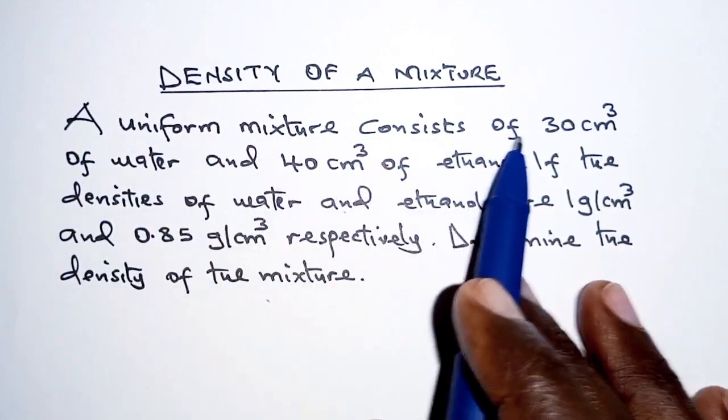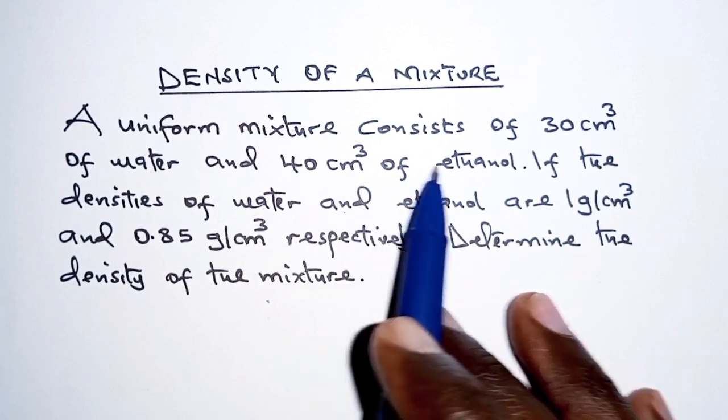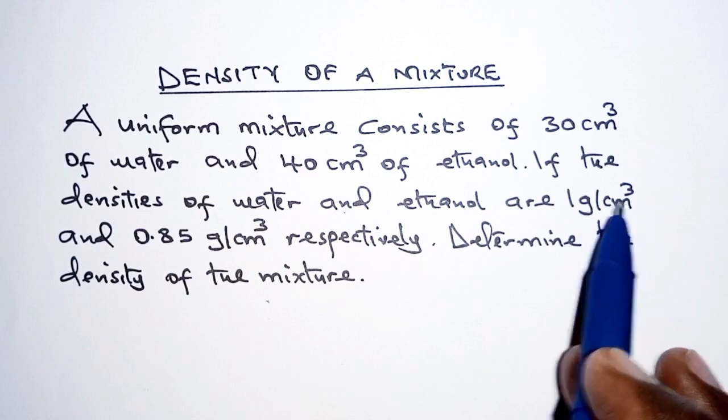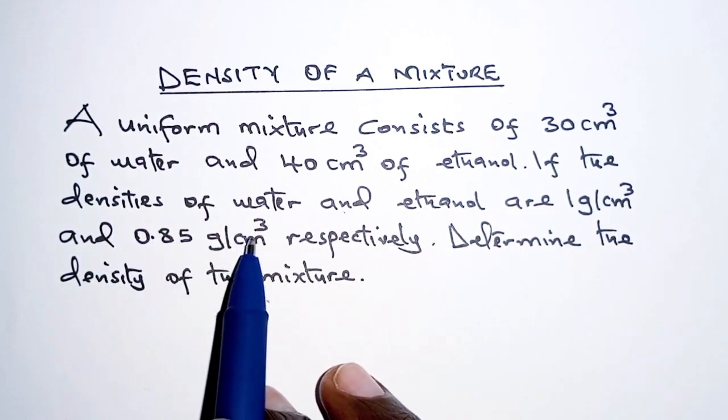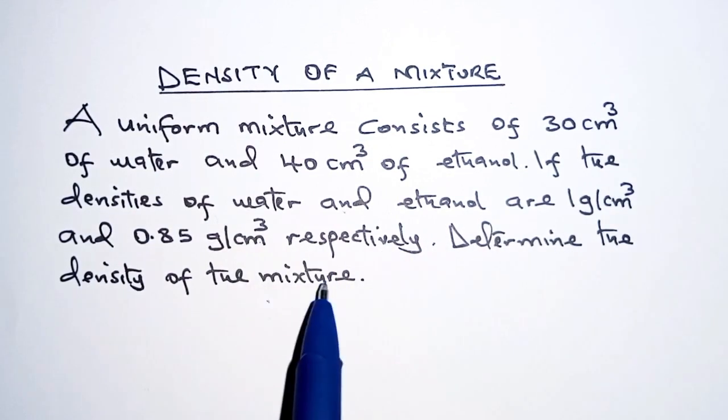A uniform mixture consists of 30 cubic centimeters of water and 40 cubic centimeters of ethanol. If the densities of water and ethanol are 1 gram per cubic centimeter and 0.85 grams per cubic centimeter respectively, determine the density of the mixture.